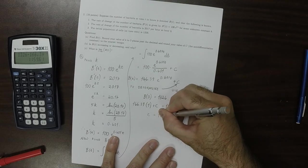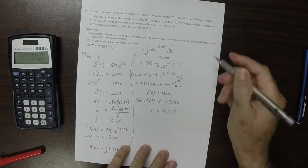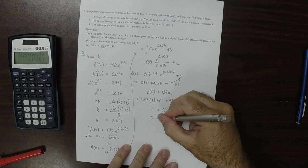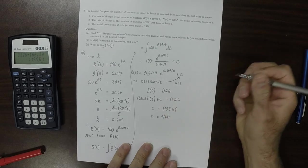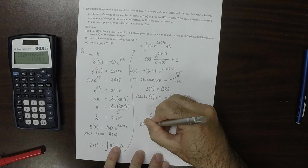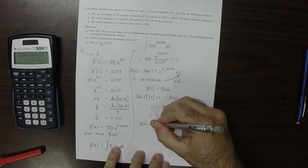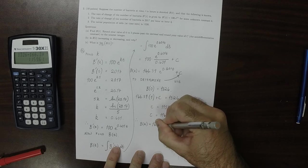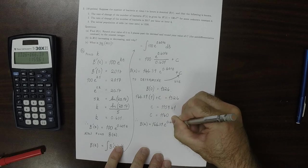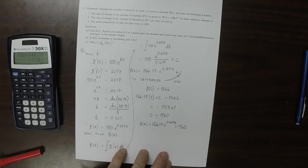Well, that's 1159.61, but then rounded to the nearest integer, according to the instructions, that c is 1160 to the nearest integer. As a result, the answer to part a is b(t) is equal to 166.39 exponential of 0.601t plus 1160. So that's the answer to part a.